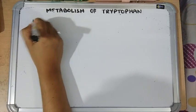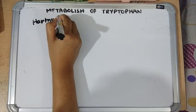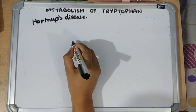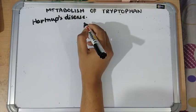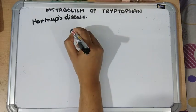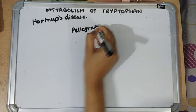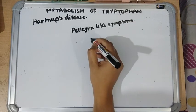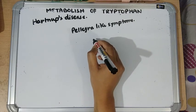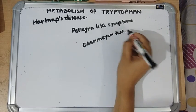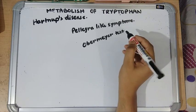The most important inborn error of tryptophan metabolism is Hartnup disease. Hartnup disease is an autosomal recessive condition due to defective absorption of aromatic amino acids from the intestine as well as defective renal tubular reabsorption, which is why amino acids are excreted in urine. Clinical findings include pellagra-like symptoms: dermatitis, diarrhea, and dementia, due to deficient synthesis of niacin since tryptophan is not absorbed. Diagnosis is based on aminoaciduria and the Obermeyer test, which detects indole compounds in the urine.